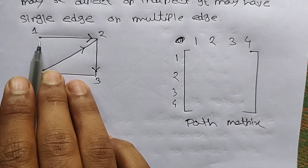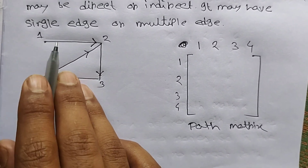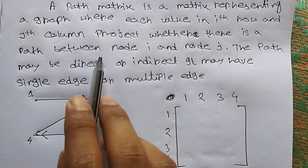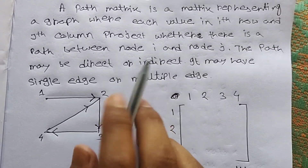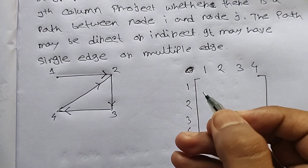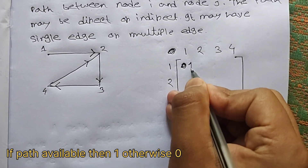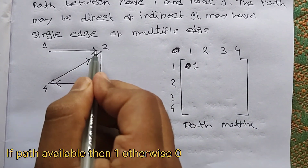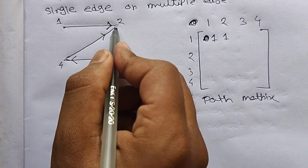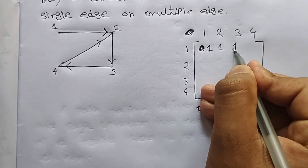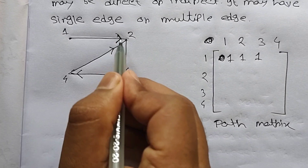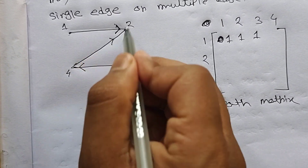Now filling the matrix: 1 to 1 — there is no edge but a path is available, so we put 1. 1 to 2 — there is a directed edge, so 1. 1 to 3 — no directed edge, but we can go 1→2→3, so path is available, put 1. 1 to 4 — no directed edge but path 1→2→3→4 exists, so put 1.